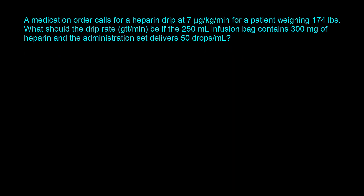Now let's take a look at the second question. A medication order calls for a heparin drip at 7 micrograms per kg per minute for a patient weighing 174 pounds. What should the drip rate in drops per minute be if the 250-milliliter infusion bag contains 300 milligrams of heparin and the administration set delivers 50 drops per milliliter?